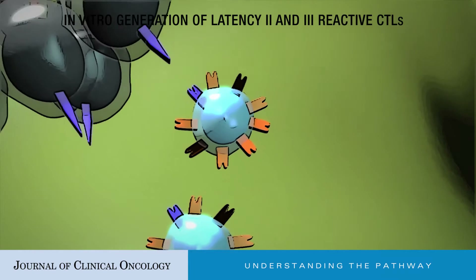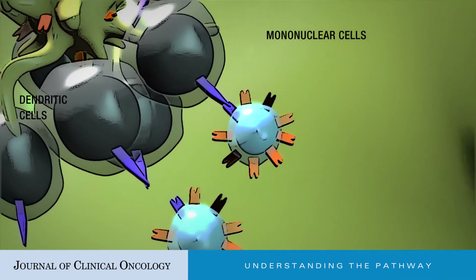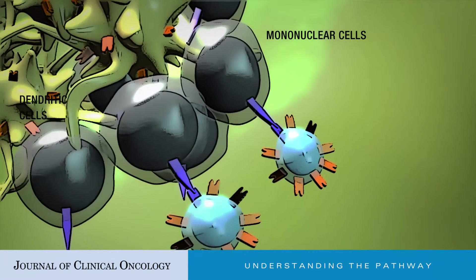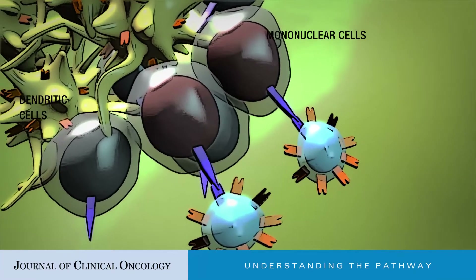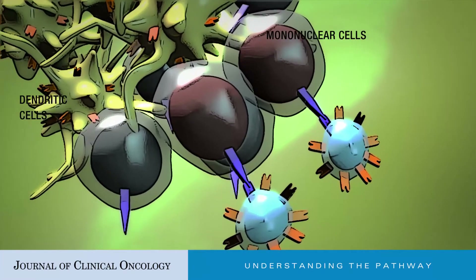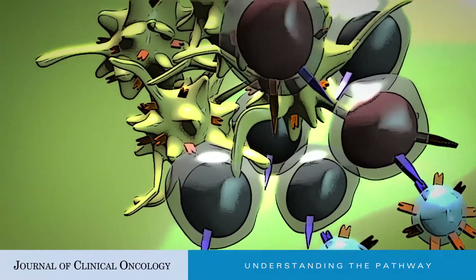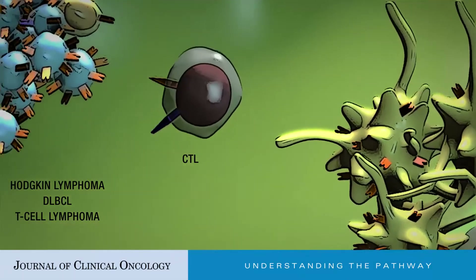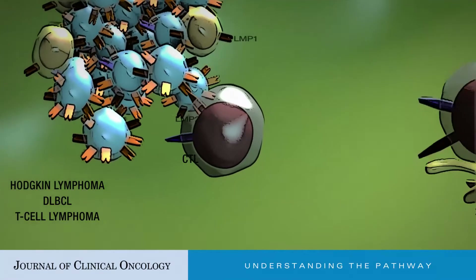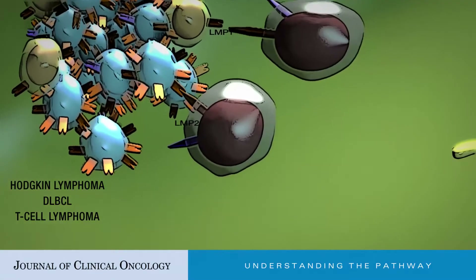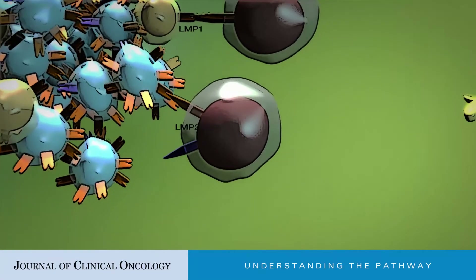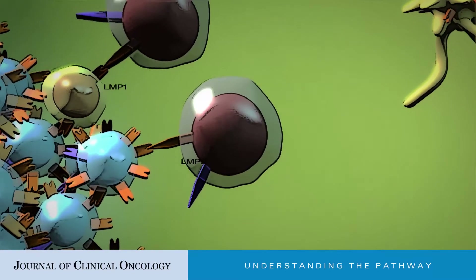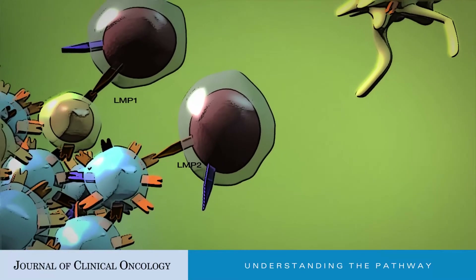Stimulation with dendritic cells transduced with an adenoviral vector containing a truncated LMP1 and LMP2 construct, before stimulation with similarly transduced EBV-LCLs, also yields CTLs with high reactivity to LMP1 and LMP2. These CTLs are capable of recognizing malignancies expressing latency 2, such as Hodgkin lymphoma, diffuse large B-cell lymphoma, and T-cell lymphomas seen in immunocompetent individuals.